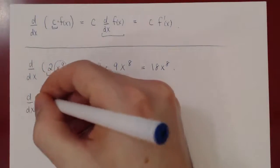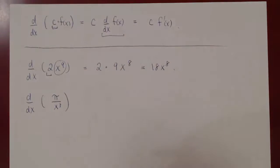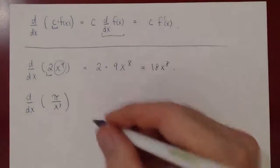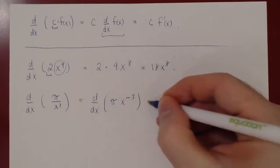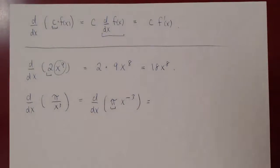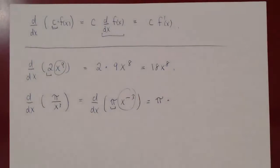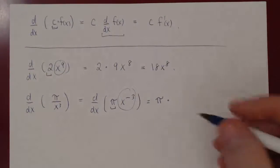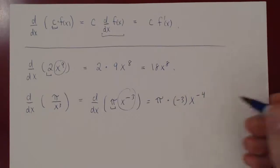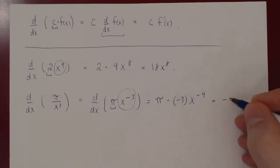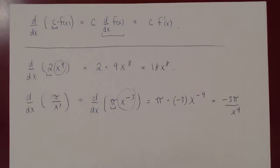Consider the derivative with respect to x of pi over x cubed. We have to manipulate this first — use the power rule by bringing x up, so this becomes the derivative of pi times x to the negative 3. Pi is a constant multiple, about 3.14159, so pi stays there times the derivative of x to the negative 3. Applying the power rule, we bring down negative 3, giving pi times negative 3 times x to the negative 4. We can simplify this as negative 3 pi, and send the x down to get a positive power of 4.